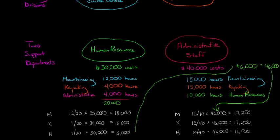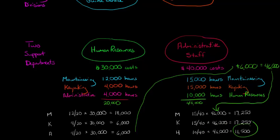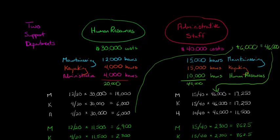There are 40,000 total hours that the admin staff provides. Mountaineering gets 15,000 out of 40, so 15/40 times $46,000 equals $17,250 allocated to mountaineering. The same amount — $17,250 — goes to the kayaking division, as they also receive 15,000 hours of service out of 40,000. The HR department, which we just brought to zero, now goes from zero to $11,500, because 10/40 times $46,000 equals $11,500 being allocated back to HR.